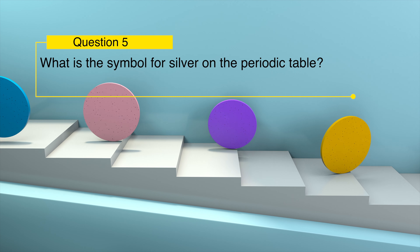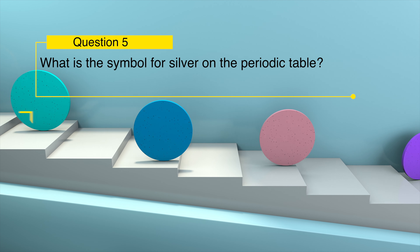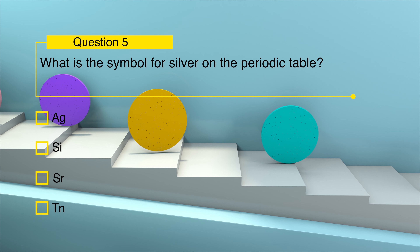What is the symbol for silver on the periodic table? Ag, C, Sn, or Tn?